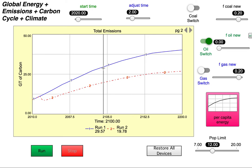And I see that in run one, that's our control, it was 29.57 gigatons of carbon emitted. And then run two, it's down to 19.78.